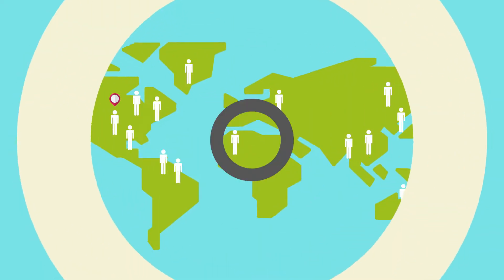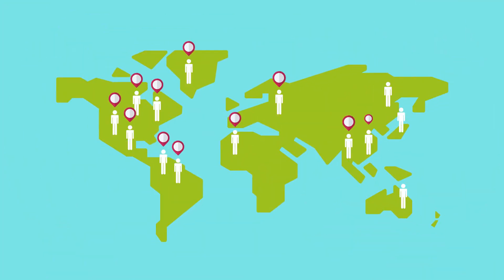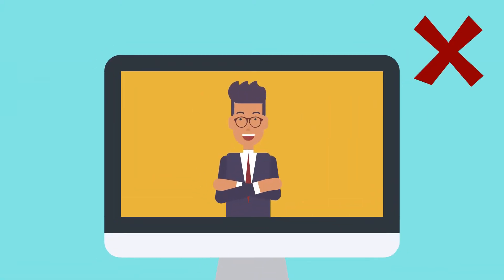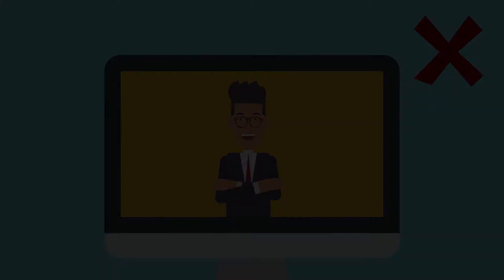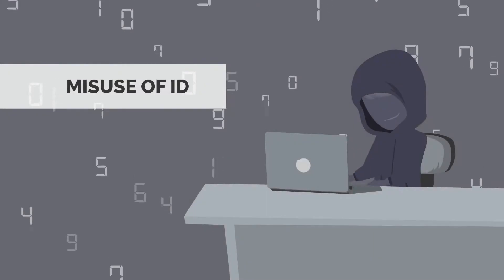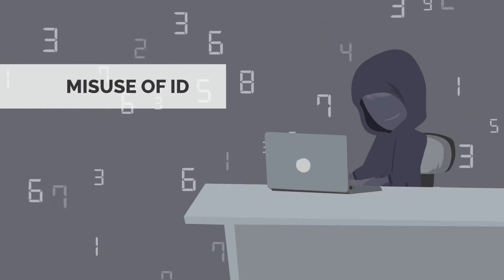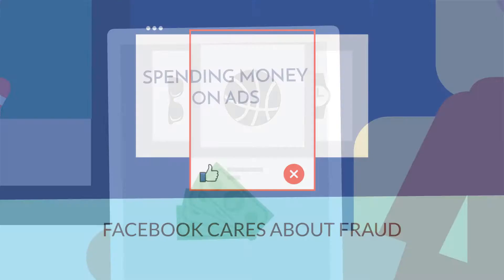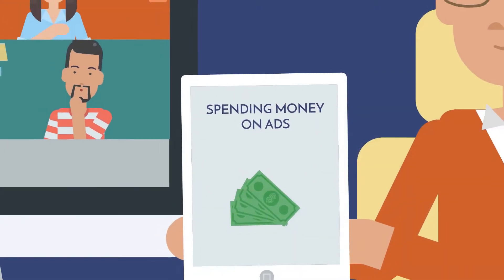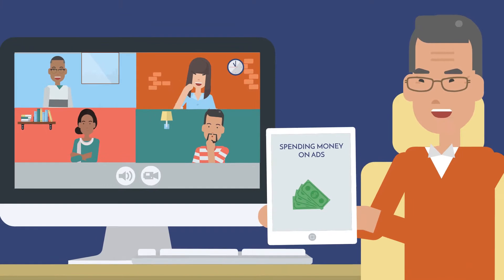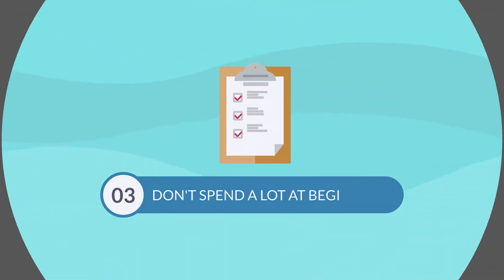Don't log in from many different locations. If you're traveling, avoid logging into your ad account from many different IP addresses. This prevents triggering the algorithm into thinking your account is being misused by someone else. Facebook cares about fraud and needs to ensure it's really you spending money on the ads.